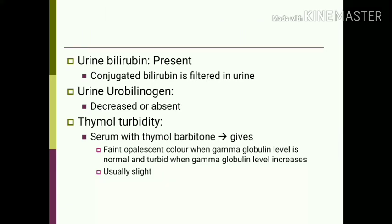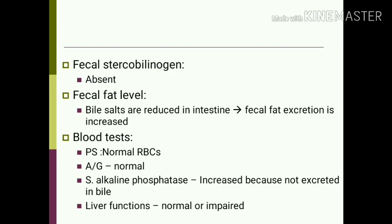The thymol turbidity test in obstructive jaundice is slightly turbid. Fecal stercobilinogen is absent because obstruction prevents conjugated bilirubin from reaching the intestine, so no urobilinogen or stercobilinogen is formed. Fecal fat excretion is increased as bile salts are reduced in the intestine. Peripheral smear shows normal RBCs. The albumin-globulin ratio is normal as liver functions are normal in obstruction pathology. Serum alkaline phosphatase is increased because it is not excreted in the bile; liver functions are normal or impaired depending on hepatocyte damage.